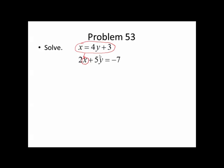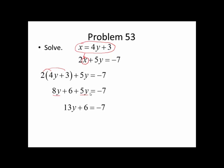x is the same as 4y plus 3, so I can substitute that expression for x in the second equation. Replace x by 4y plus 3. Now I have an equation that just has y in it. I'm going to distribute the 2. 2 times 4y is 8y, 2 times 3 is 6. I have a pair of like terms to combine. 8y plus 5y is 13y. I'm going to get rid of the 6 by subtracting 6 from both sides.